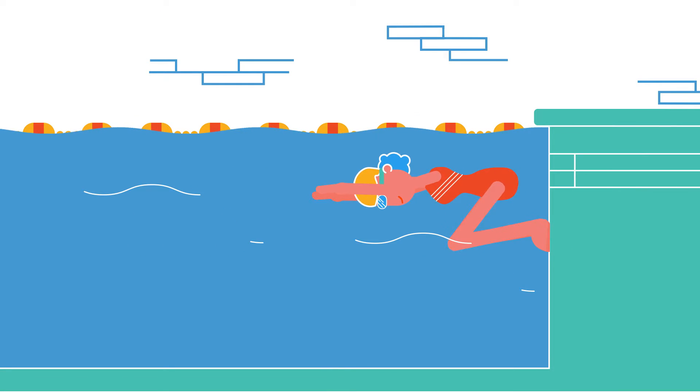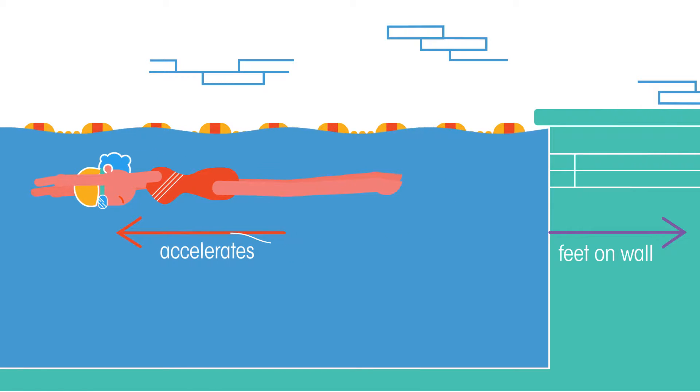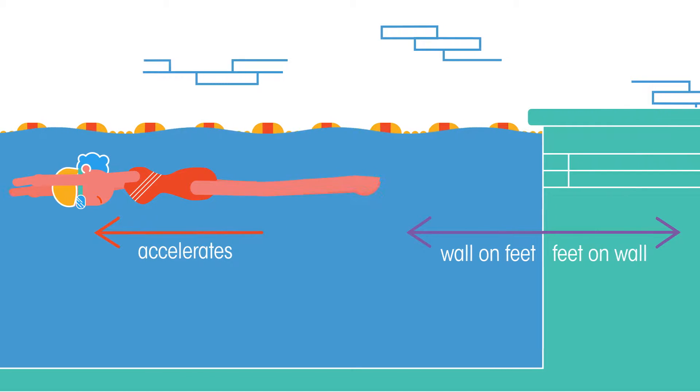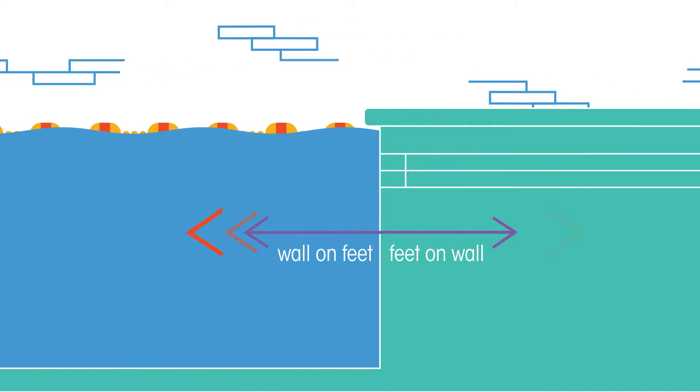For example, the swimmer pushes against the pool wall with her feet and accelerates in the direction opposite to that of her push. The wall has exerted an equal and opposite force back on the swimmer. The forces are equal in magnitude or size but opposite in direction.